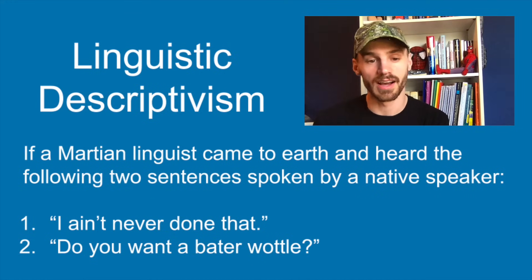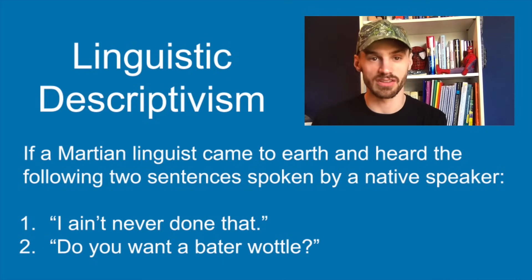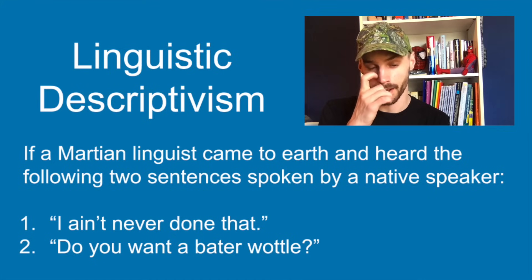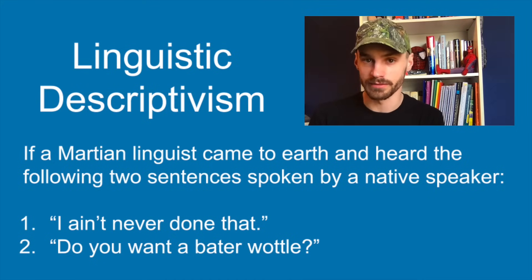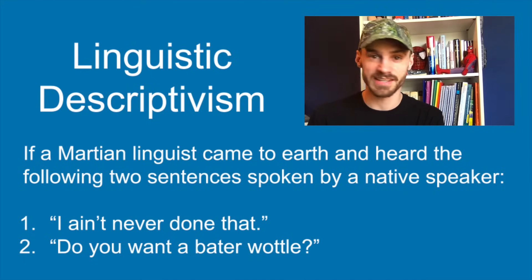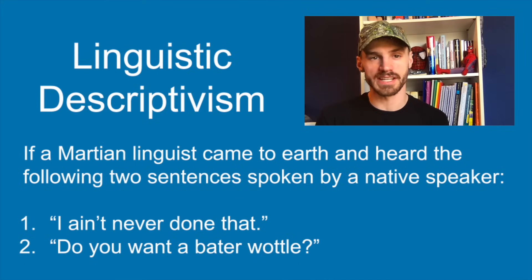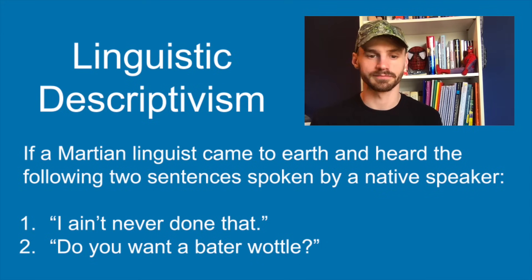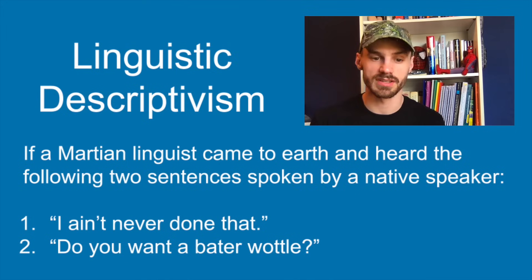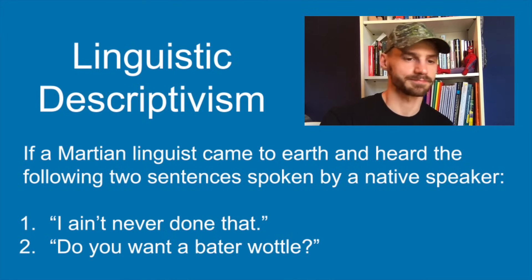So which of these two sentences would the Martian consider to be an error? The answer is number two. Sentence one is perfectly grammatical. The Martian would listen and say, 'I hear people say that all the time — this is fine, this is just the way these humans speak and there's nothing wrong with that sentence.' He would say sentence number two is clearly an error — she meant to say one thing and accidentally said something else. The first guy said exactly what he meant to say. So grammatical simply means a sentence that would be spoken naturally by a native speaker. Since native speakers say 'I ain't never done that,' that's a grammatical sentence. 'Do you want a butter waddle?' — not a grammatical sentence.